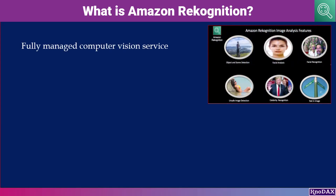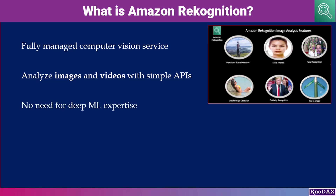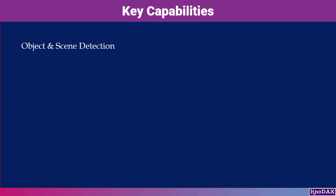Amazon Recognition is a fully managed computer vision service. With just a few API calls, you can analyze images and videos at scale. And the best part is, you don't need to be a machine learning expert to use it. Recognition offers a wide range of features.